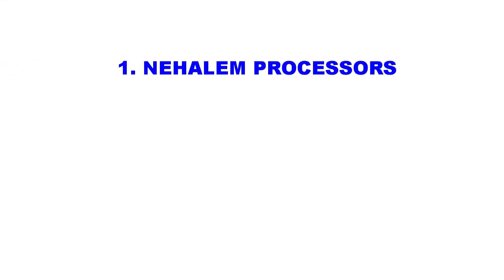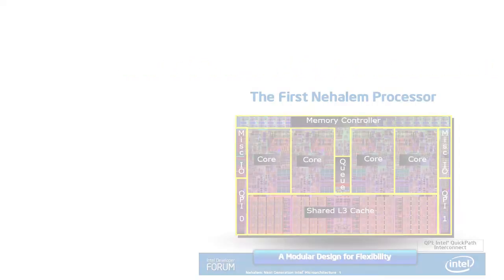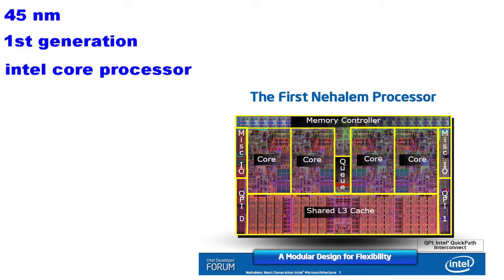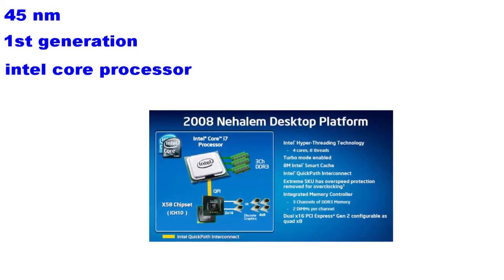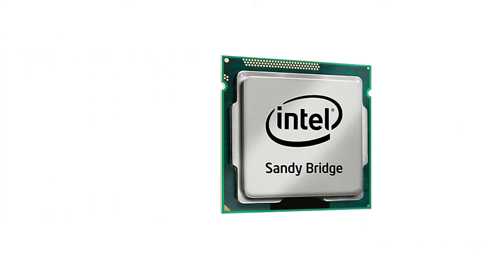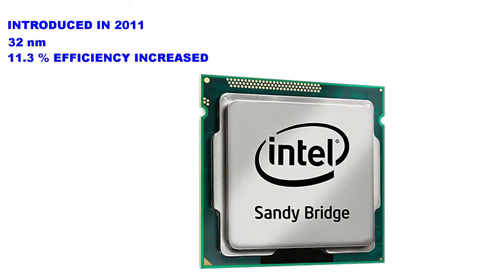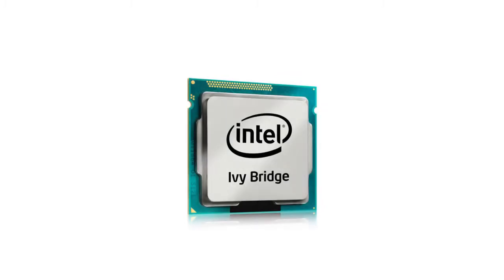Nehalem was the Intel processor micro-architecture, successor to the core architecture, which had certain limitations like inability to increase clock speed, inefficient pipelining, and many more. Nehalem used a 45 nanometer processor. Sandy Bridge processors were introduced in 2011 and used 32 nanometer architecture. Sandy Bridge's average performance enhancement compared to Nehalem was about 11.3%.